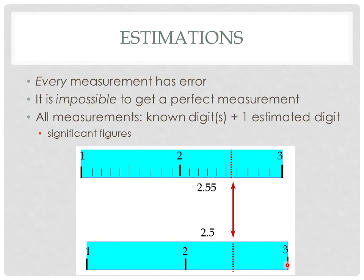We can tell that because it's between two and three. So this measurement — the digit two — would be a known digit. The point five, we're estimating. When we look at this measuring device, what we're doing in our head is subdividing this space between two and three into ten equal parts, and we estimate that it's half the way between two and three. So you record your measurement as two point five, where the point five is the estimated digit.